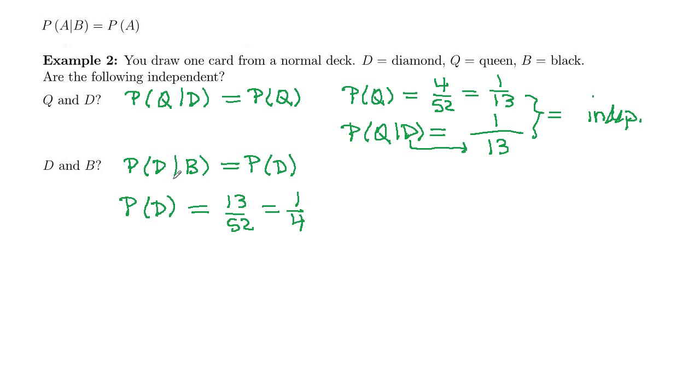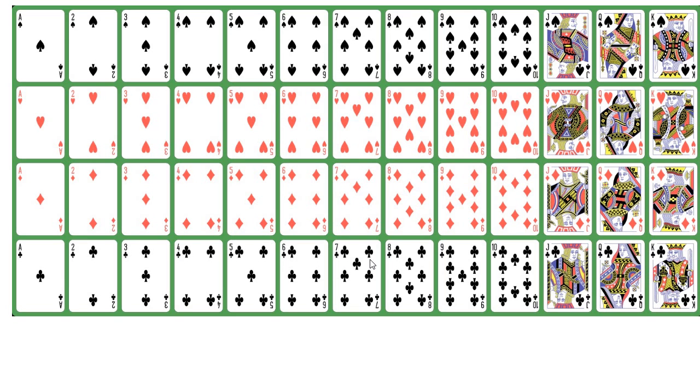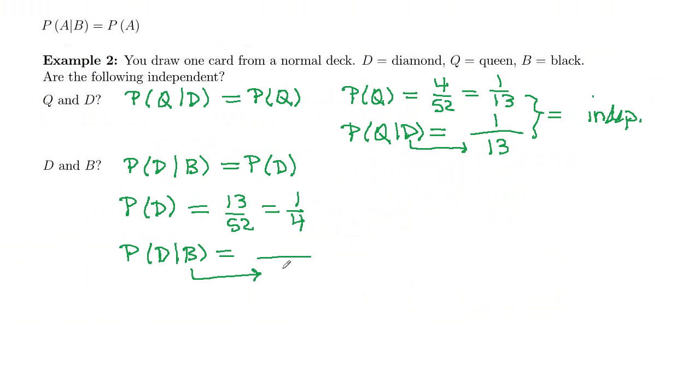And then let's look at probability of diamond, given black. So the given event restricts your total outcomes. It's given that it's black. So we're only considering black cards. Black cards, there's 13 clubs and 13 spades. So that's 26.